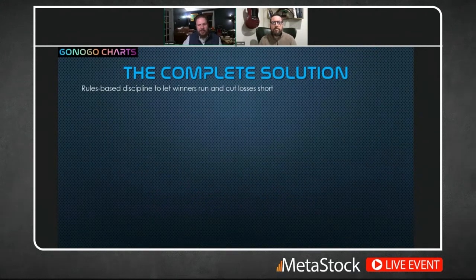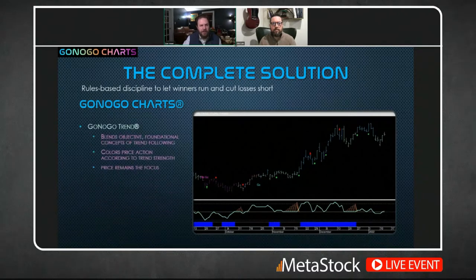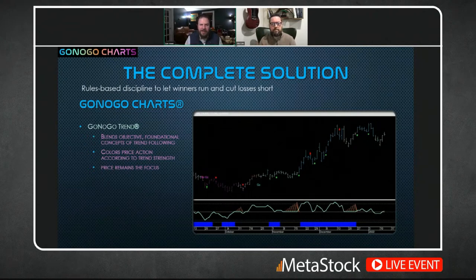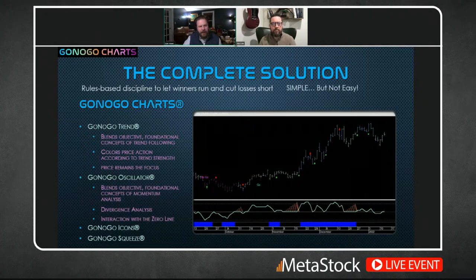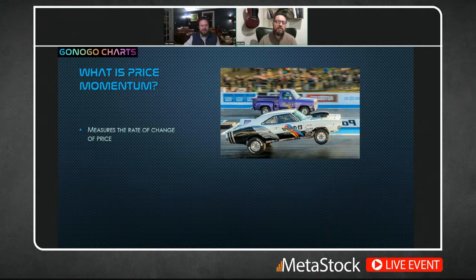The complete GoNoGo Charts solution includes four main indicators. We've talked about the GoNoGo Trend — blending all technical indicators into that whole routine checklist process for identifying and participating in trends. Now we'll talk about the GoNoGo Oscillator, the icons, and the GoNoGo Squeeze — a volatility indicator that Alex developed. Alex, talk to us about momentum: how do you define it? Whenever I teach technical analysis, I relate momentum to Formula One and rally racing — specifically to acceleration.